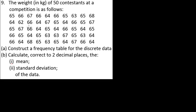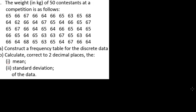Let's start the construction of the frequency table. Looking at this data, the lowest number is 62 and the highest is 68. On our frequency table, the weights will be listed as X.